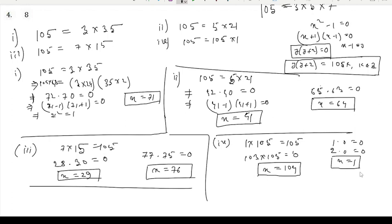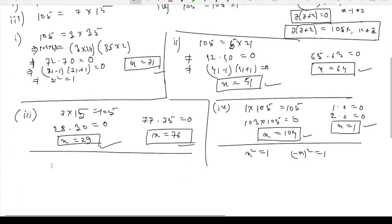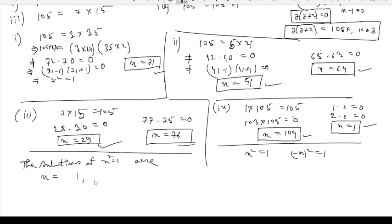The solutions found so far are: x = 1, x = 104, x = 76, x = 29, x = 71, x = 41, x = 64. It is clear that if x is a solution of x² = 1, then −x is also a solution, since (−x)² = x² = 1.